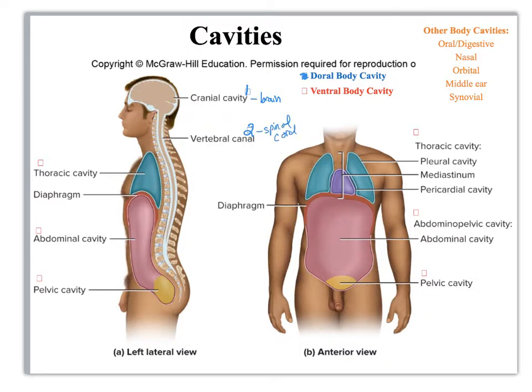So if I'm describing these things I would say the spinal cord is within the vertebral cavity, which is within the dorsal body cavity, or the brain is within the cranial cavity, which is within the dorsal body cavity.